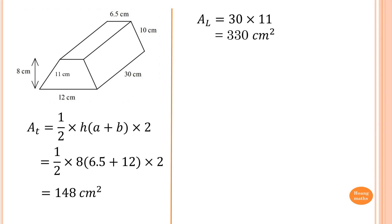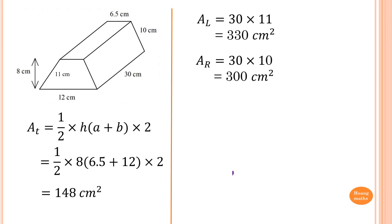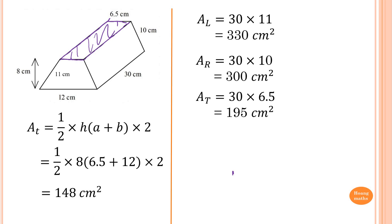To work out the area of the right side, which is 30 by 10, so 30 times 10 gives me 300 cm². The area of the top panel is 30 times 6.5, which gives me 195 cm².